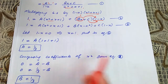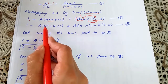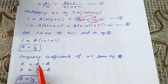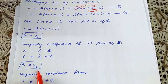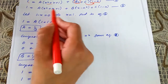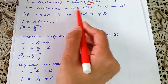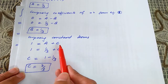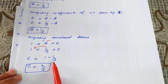Comparing coefficients of x² in equation 3: there is no x² term on the left, so write 0. The coefficient of x² on the right is a minus b, so 0 = a - b. Substituting a = 1/3 gives b = 1/3. Now comparing constant terms: the constant term on the left is 1, and on the right it is a.